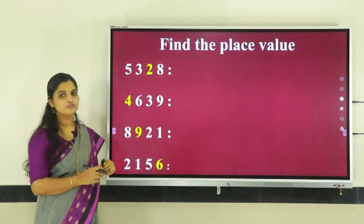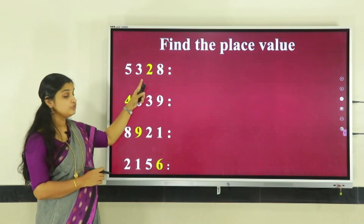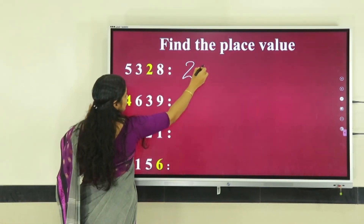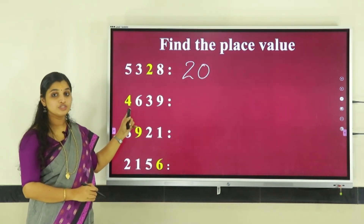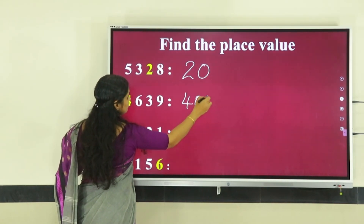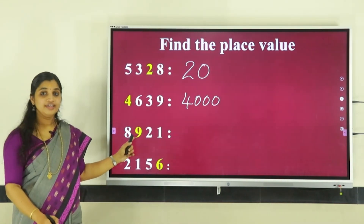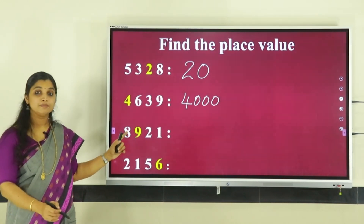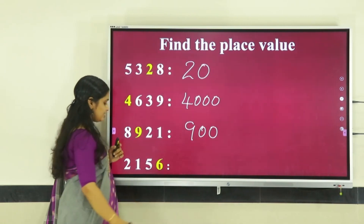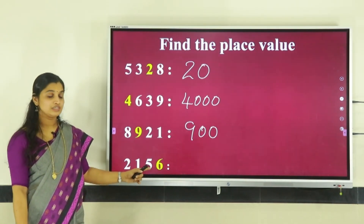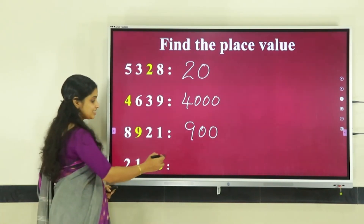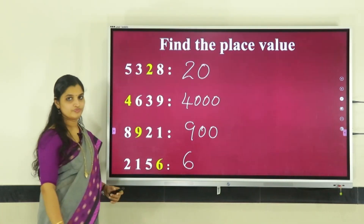Let us find out the place value of the colored digit in each number. Two is in the tens place, so the place value is twenty. Four is in the thousands place, so the place value is four thousand. Nine is in the hundreds place, so the place value is nine hundred. Six is in the ones place, so the place value is six itself.